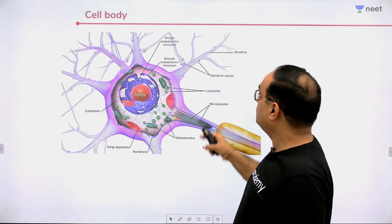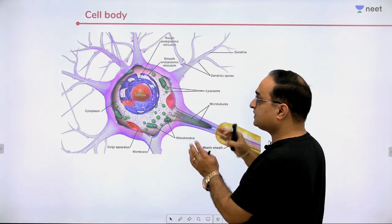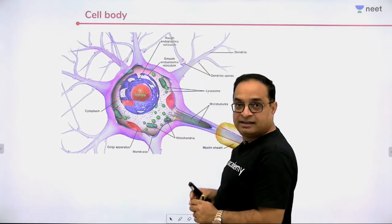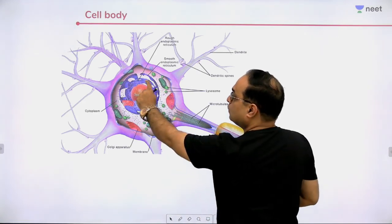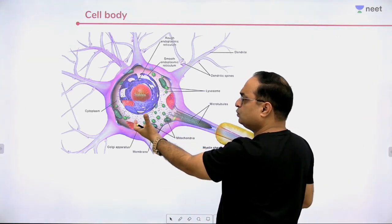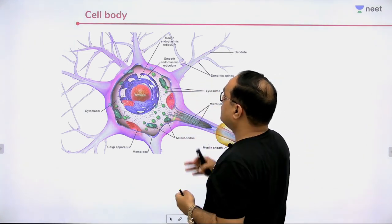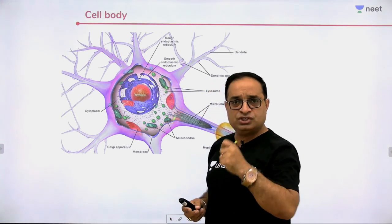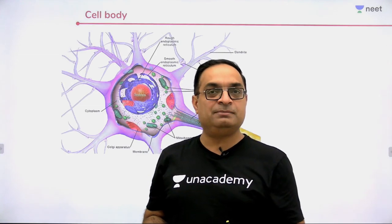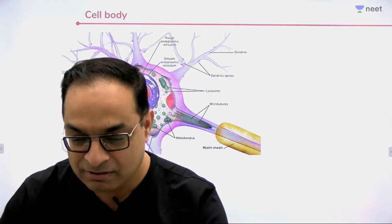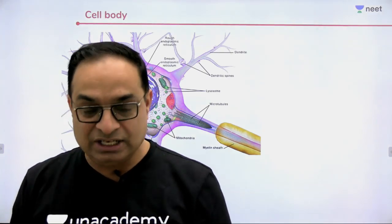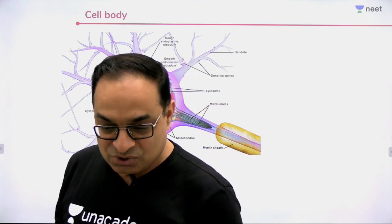Now let's look at the cell body in an enlarged view. The nucleus is clearly visible. Typical cell organelles found in a neuron include mitochondria, microtubules, lysosomes, and smooth endoplasmic reticulum. There's also a special type of granule found in the neuron's cell body — can you tell me what those granules are called?